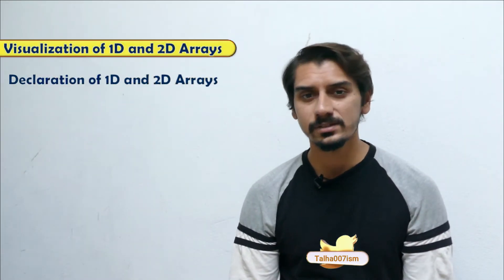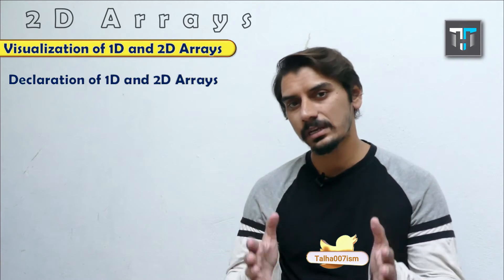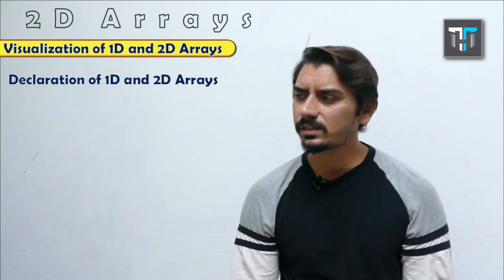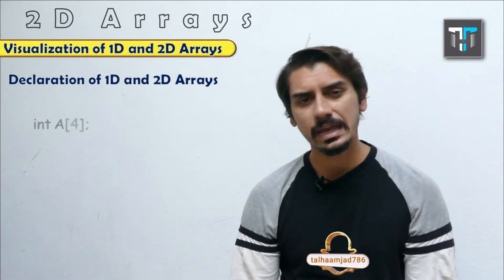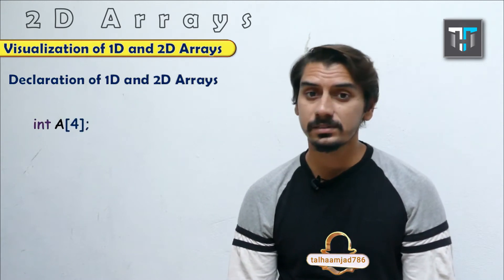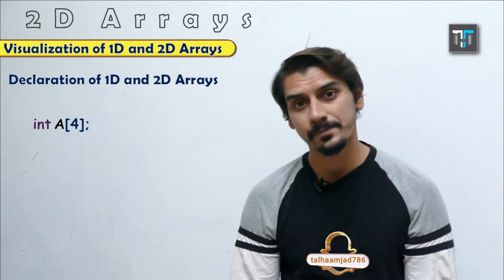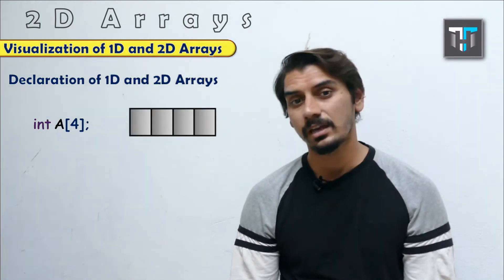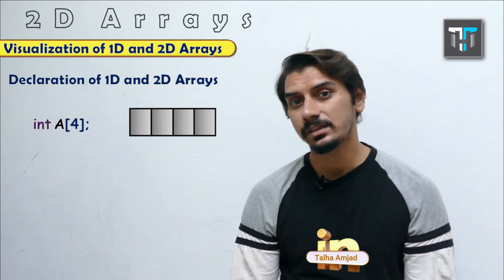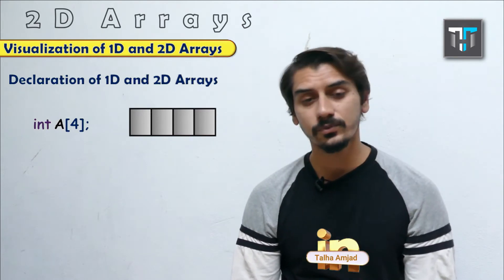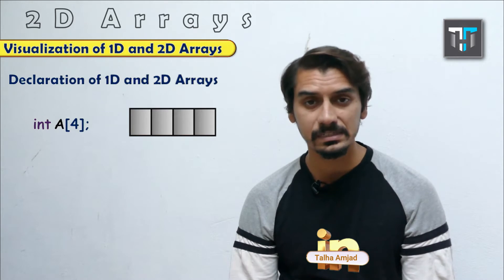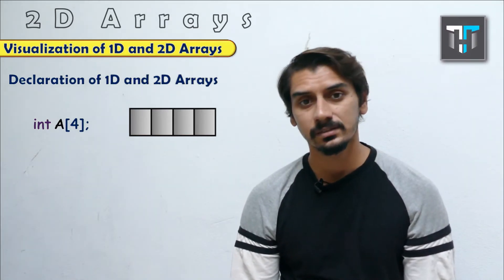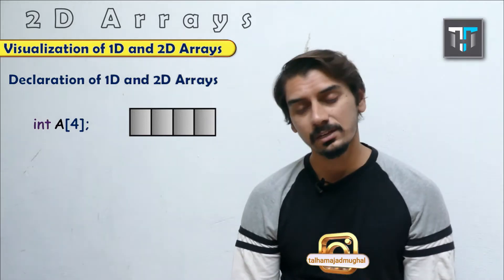First, let's revise the concepts of a 1D array. When talking about the visualization of a 2D array versus a 1D array, the 1D array is declared as int a[4], meaning we declare an array named 'a' having integer type variables with a length of 4 — so it takes four elements.